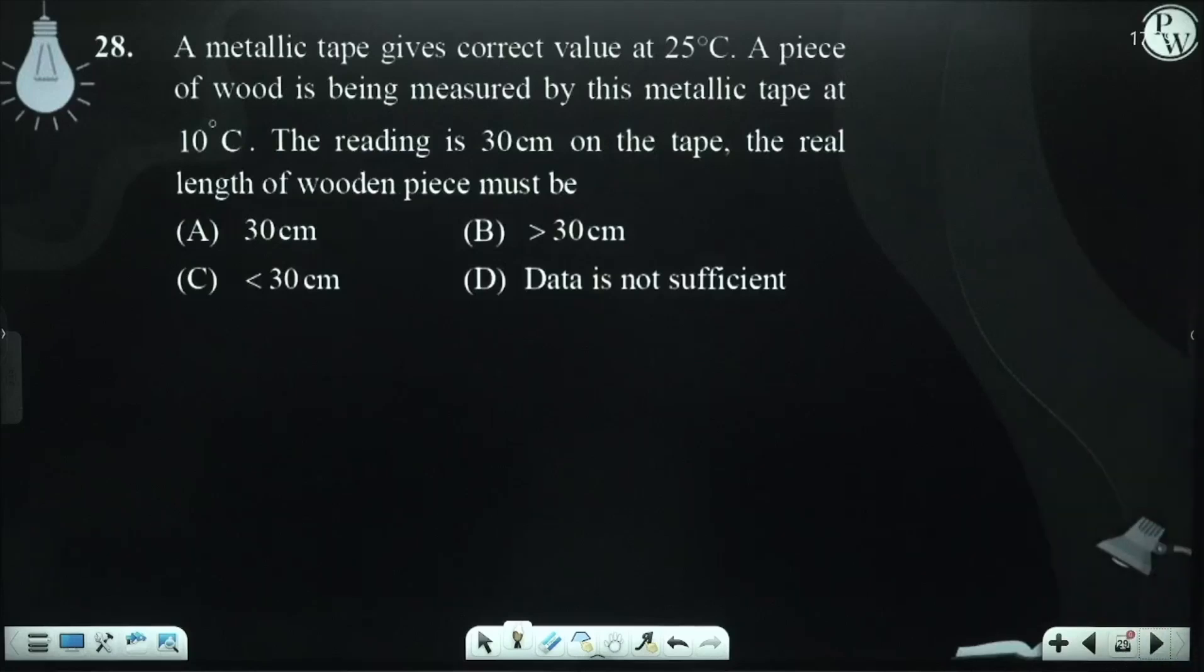A metallic tape gives correct value at 25 degrees Celsius. A piece of wood is measured by this metallic tape at 10 degrees Celsius. The reading is 30 cm on the tape. So you are asking, the real length of the wooden piece must be what? Now you see one thing.